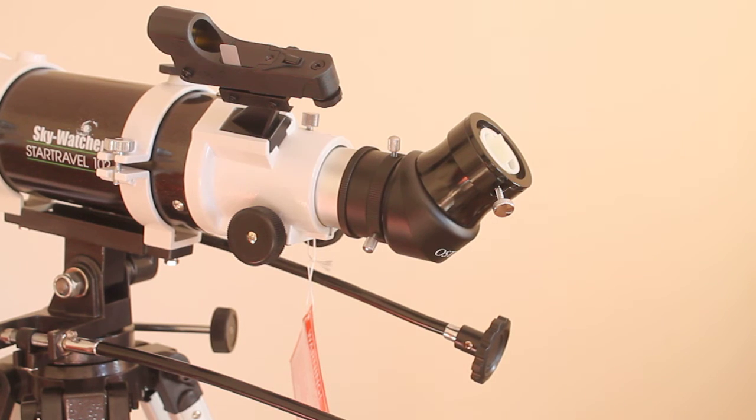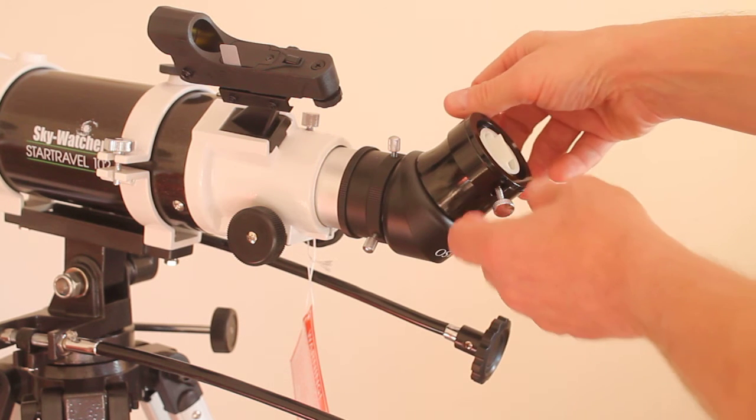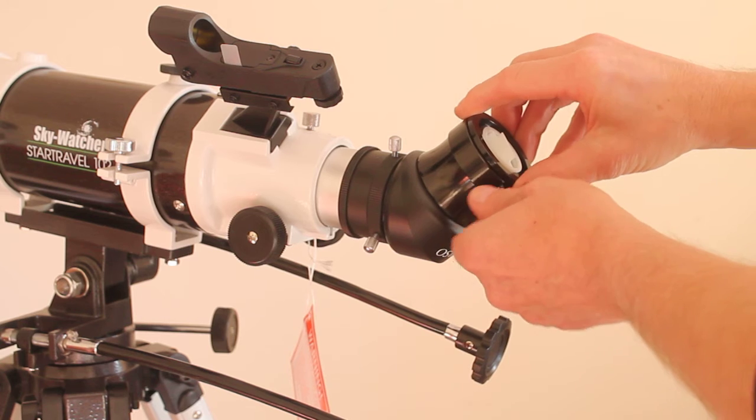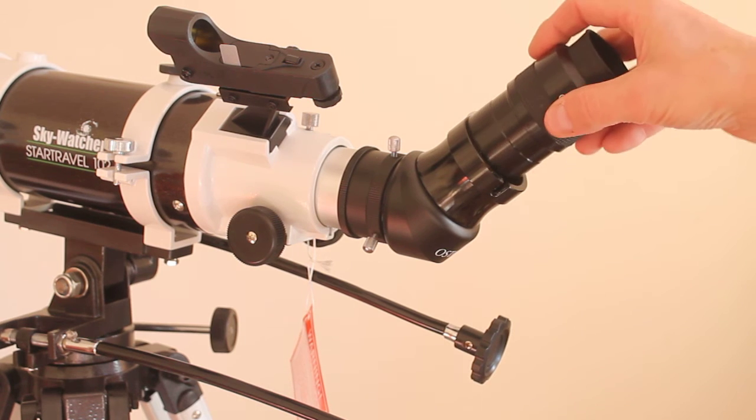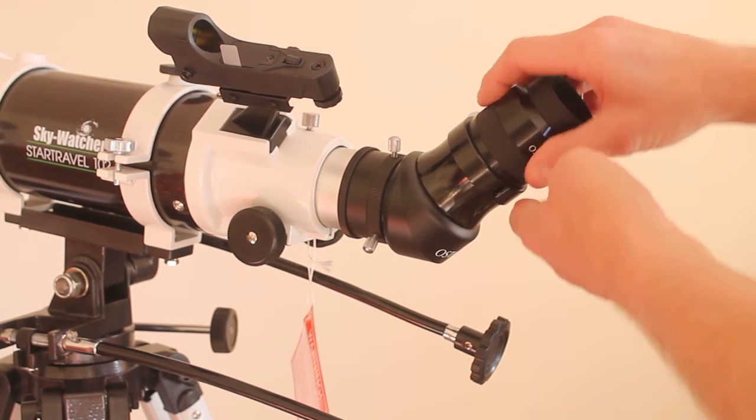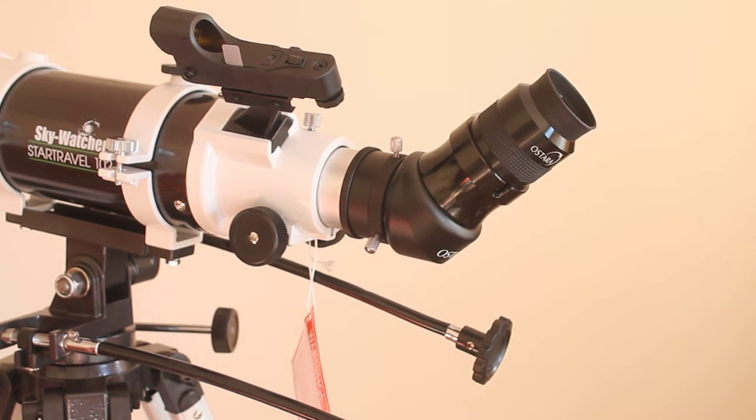So what we do is unslacken that central piece, and now you can get your 2-inch eyepiece and put it in there. I'll go through what eyepiece that is in a second.